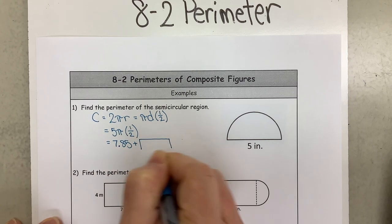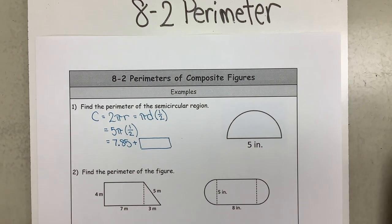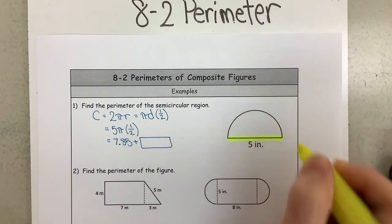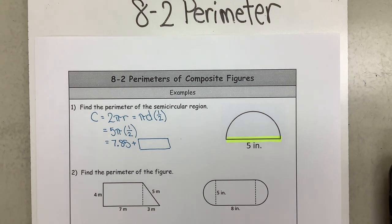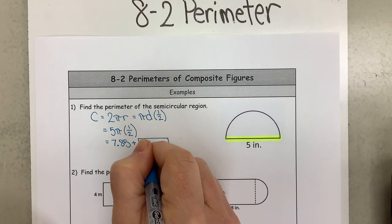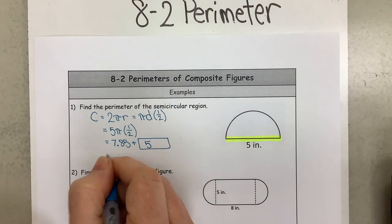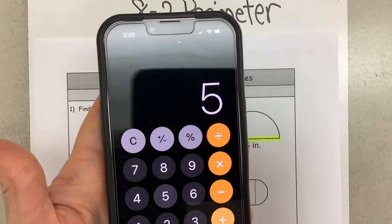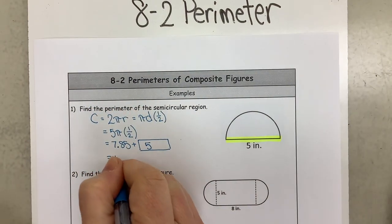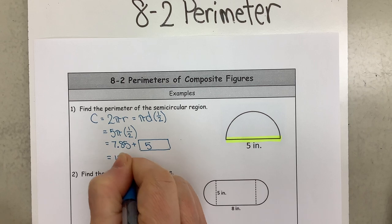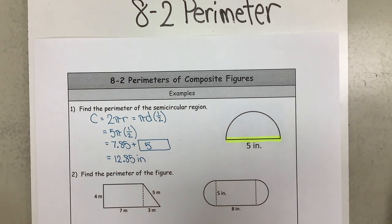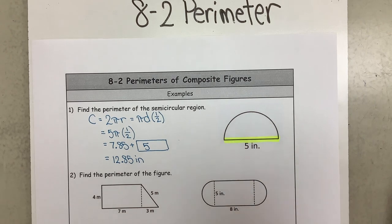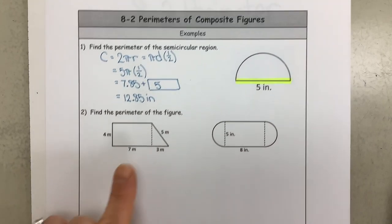This one, because it's a semicircle, still has this piece. There is an actual piece that is there. So what we're going to need to do is we're going to need to add that 5 inches to our answer. And our new answer is, we're going to take the 7.85 plus 5 and we get 12.85, and those are inches.